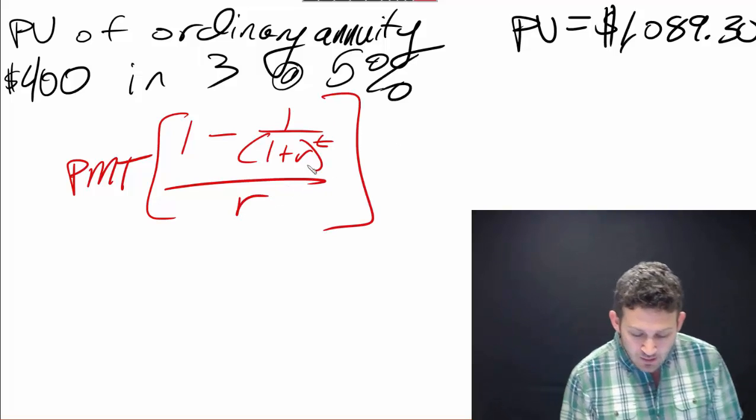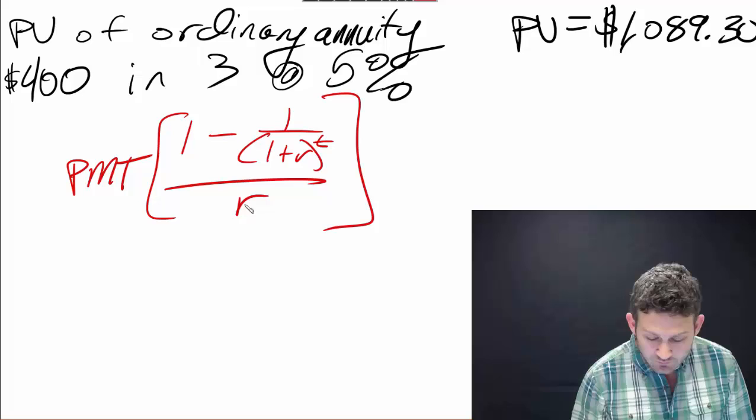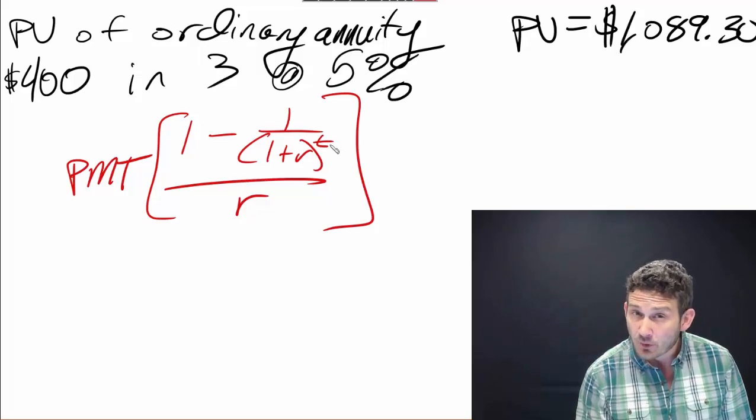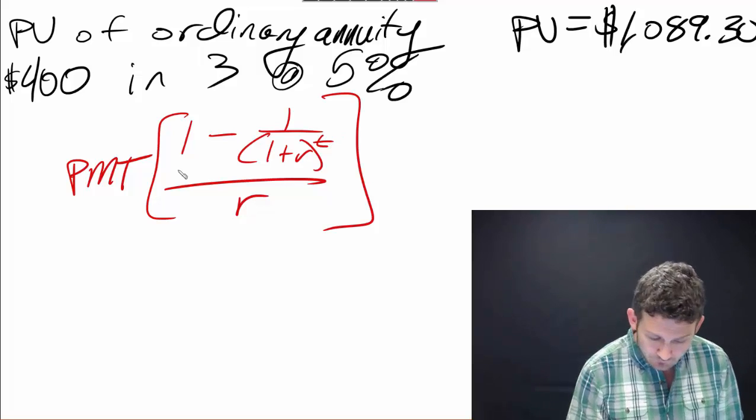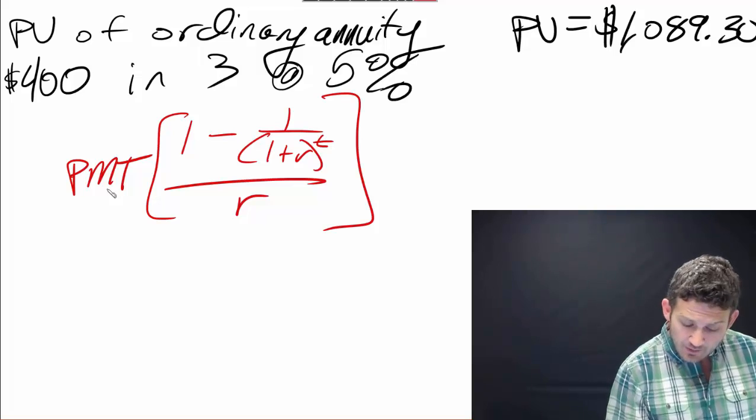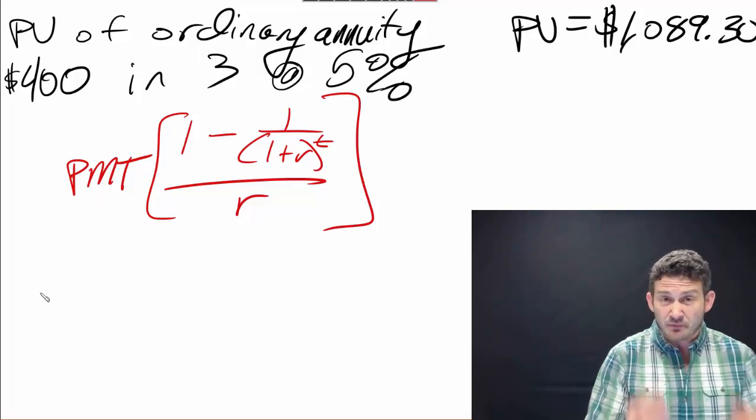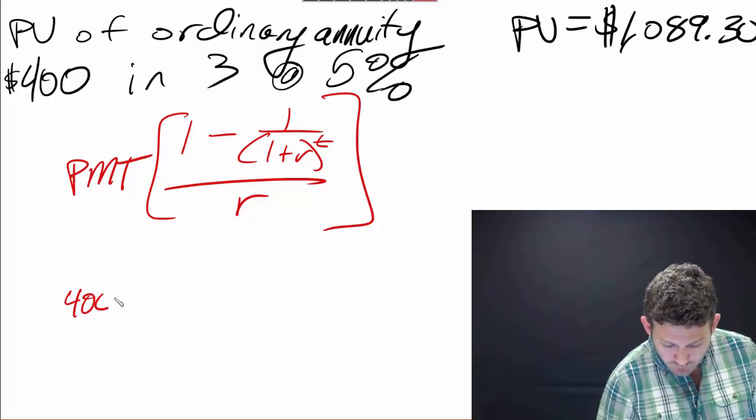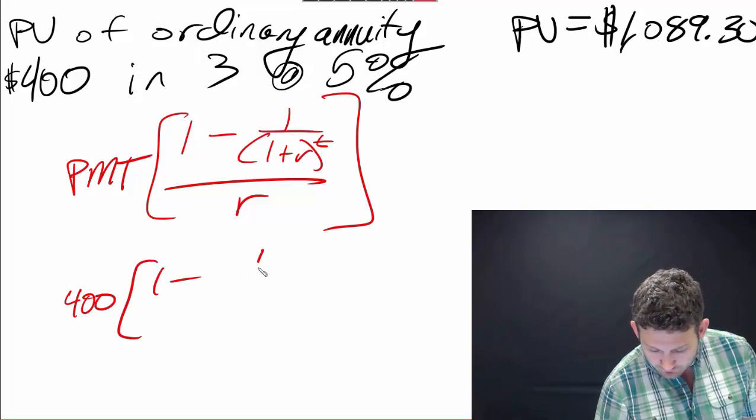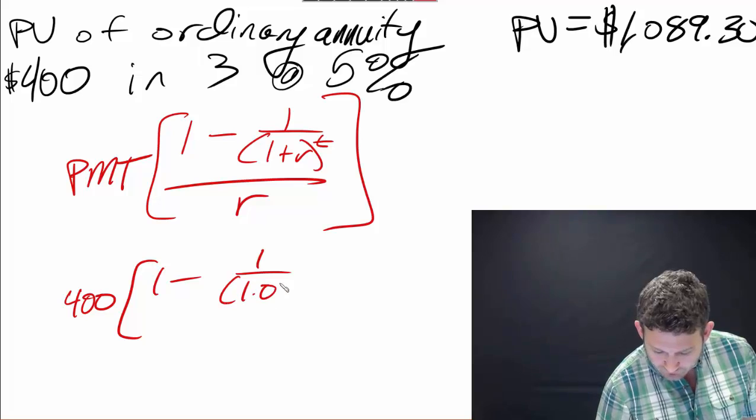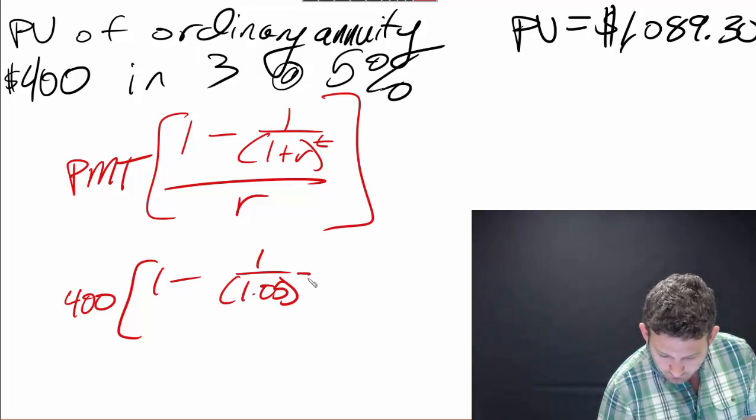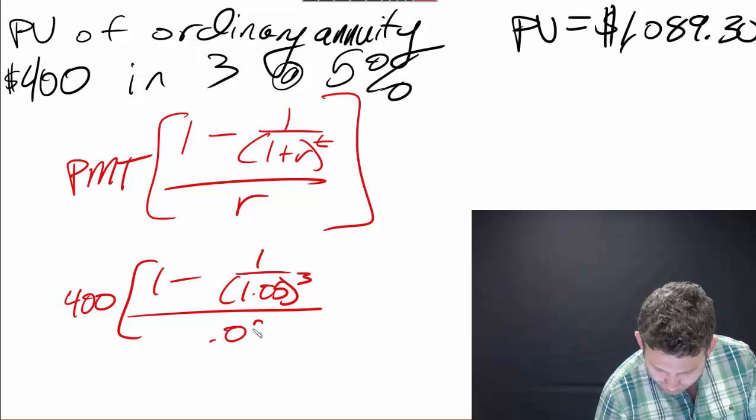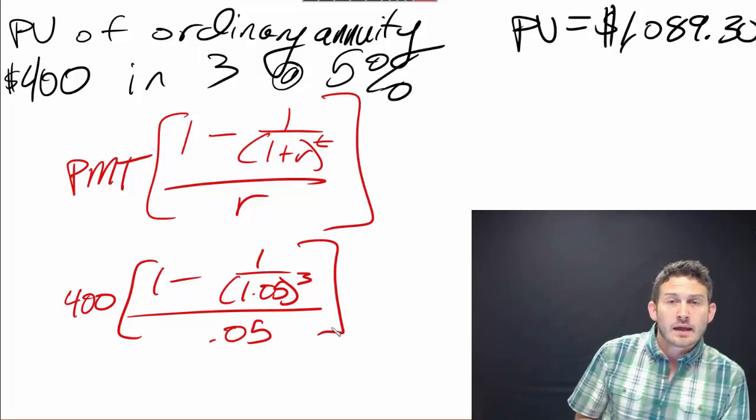Let me explain this real quick. This r that we're looking at here is still our discount rate. That t is the number of payments that we are receiving. This payment is the amount of the payments. We have three payments of $400, so we're going to have the $400 out here times (1 minus 1 over 1.05 to the third power) divided by 0.05.